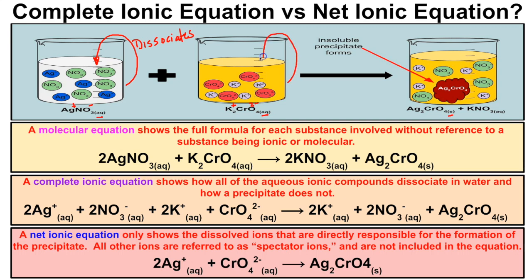Similarly, when you put potassium chromate in water it's going to dissociate, breaking apart into potassium ions and chromate ions floating around in that water. When these two solutions are mixed together, you end up with silver chromate — an insoluble solid that does not dissolve in water — plus free-floating potassium ions and nitrate ions in solution. That's your precipitation reaction.